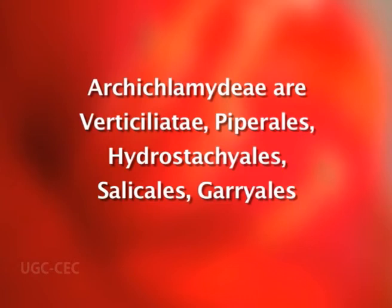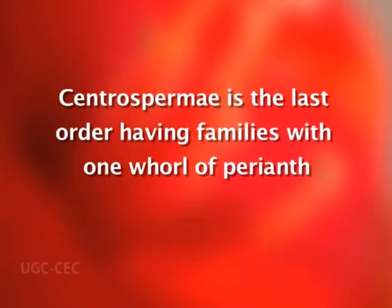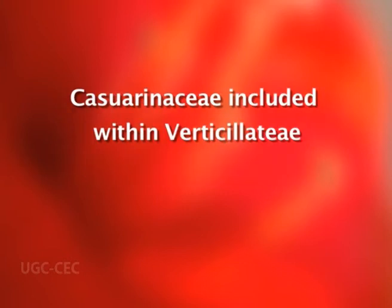These orders have naked unisexual wind-pollinated flowers and catkins called aments. Families with aments of wind-pollinated flowers are referred to as a homogenous group called Amentiferae. The achlamydeous families are followed by the monochlamydeous ones. Centrospermae is the last order having families with one whorl of perianth.